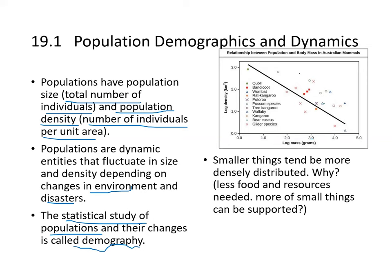The statistical study of populations and their changes is called demography. There's a relationship between population density and body mass in Australian mammals — density goes up as body size decreases, because smaller organisms need less food and resources, so more of the small creatures can be supported.